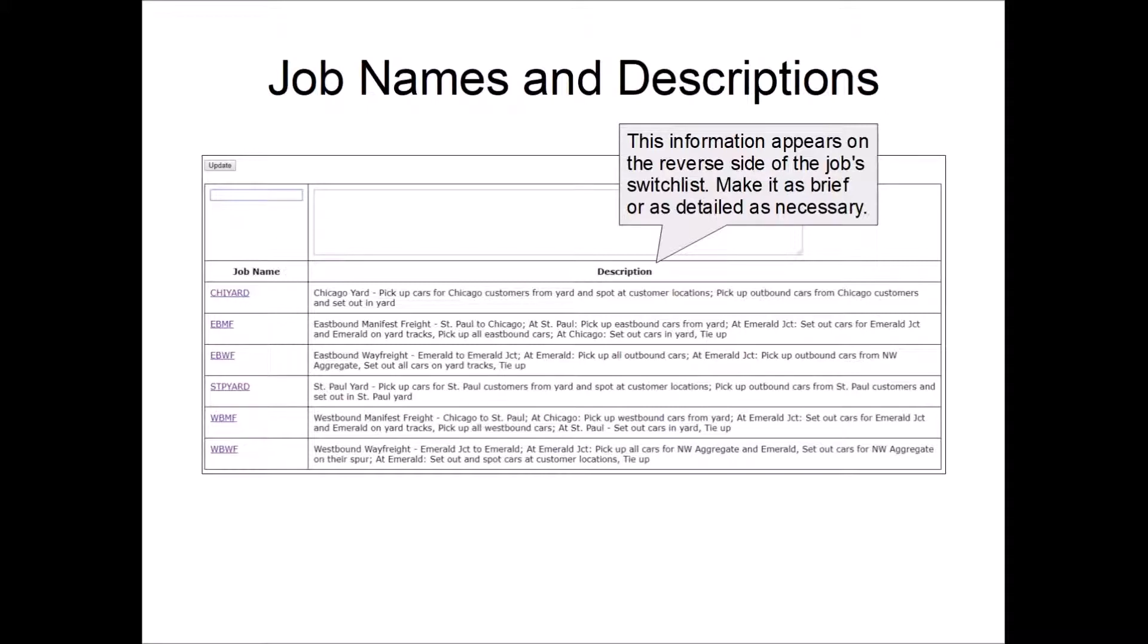The other column there are the job instructions. This is sort of an outline of what each job is supposed to do. And how detailed you make it or how broad you leave it really is up to you and your crew. This information is displayed on the back of the switch list, either if you print them out or if they display them on a mobile device.